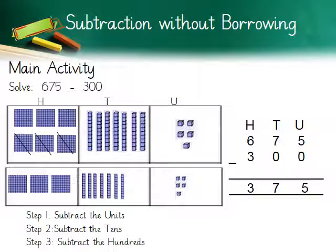Now let's start with the main activity. The given sum is 675 minus 300. This time we need to subtract three-digit numbers, and the place values are identified at the top of each digit. Units, tens, and hundreds are illustrated as base-10 apparatus. The steps you have to follow are: Step 1 — subtract the units; Step 2 — subtract the tens; Step 3 — subtract the hundreds.